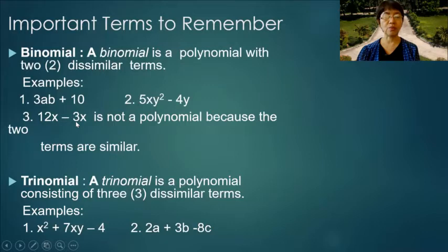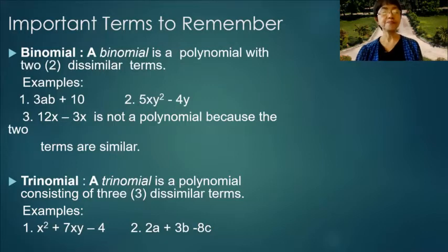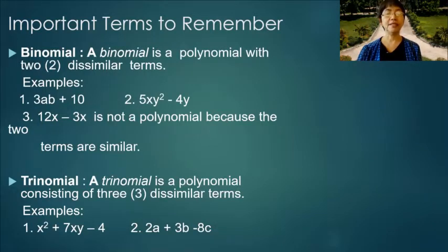Trinomial: a trinomial is a polynomial consisting of three dissimilar terms. Examples: 1) x squared plus 7xy minus 4, 2) 2a plus 3b minus 8c.